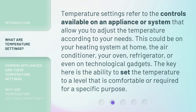Temperature settings refer to the controls available on an appliance or system that allow you to adjust the temperature according to your needs. This could be on your heating system at home, the air conditioner, your oven, refrigerator, or even on technological gadgets. The key here is the ability to set the temperature to a level that is comfortable or required for a specific purpose.